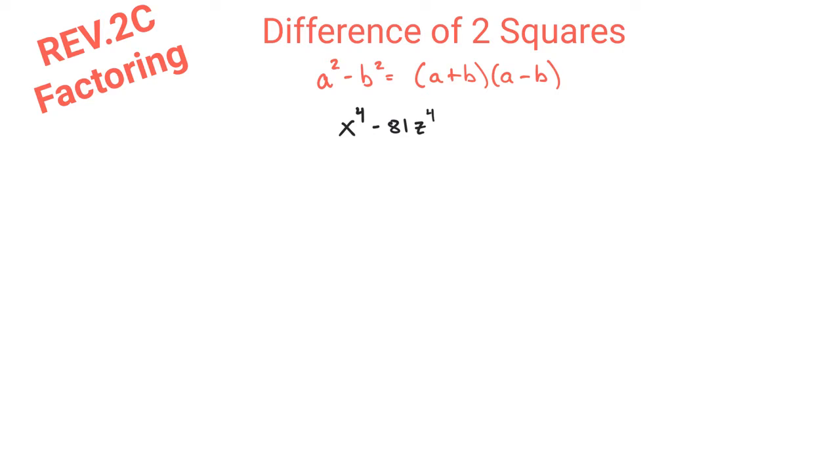In the example where we have x^4 - 81z^4, we must first treat this like any other factoring problem, where the very first step is to look for the greatest common factor. In this particular example, there isn't one because you have x^4 but z^4, but do recall that that should always be your first step.